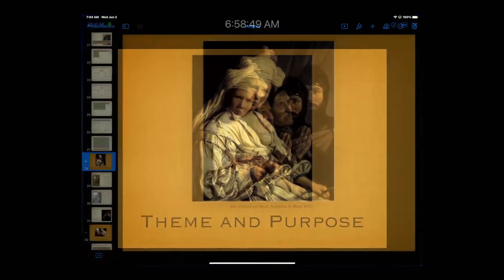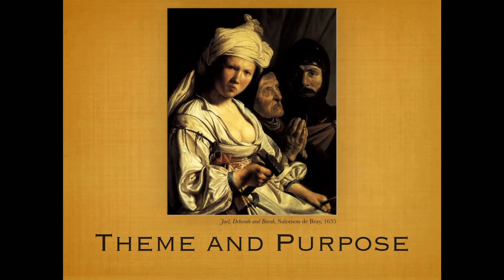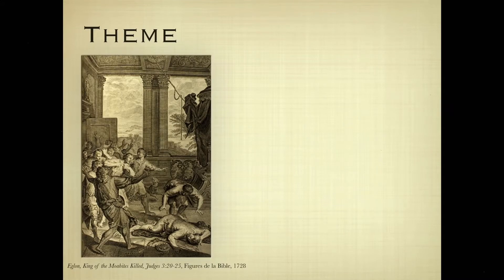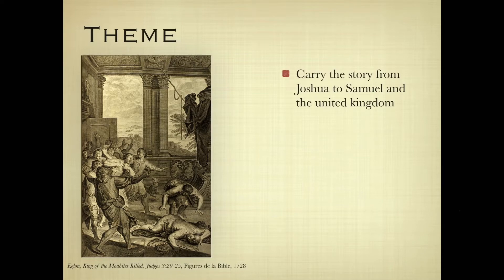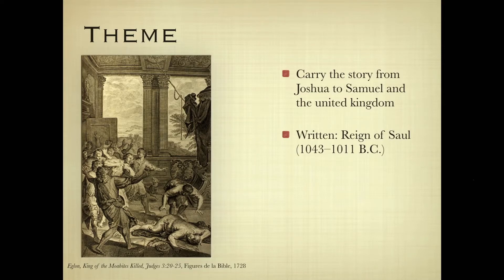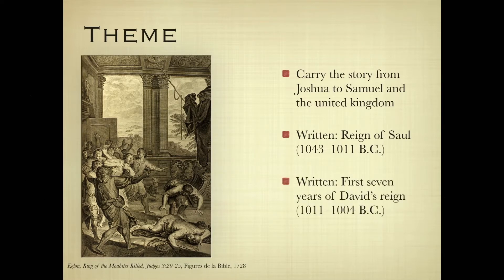Let's look at the theme and purpose of the Book of Judges, because it's important to have a good feel for what this book does in contrast to the Book of Joshua. What it seeks to do is carry the storyline of Israel from the death of Joshua to the time of Samuel and the beginning of the United Kingdom. It was written during the reign of Saul, who reigned from 1043 to 1011 B.C., or during the first seven years of David's reign, 1011 to 1004. It gives an explanation and defense of Israel's monarchy and the concept of the nation needing to be united under a righteous king.